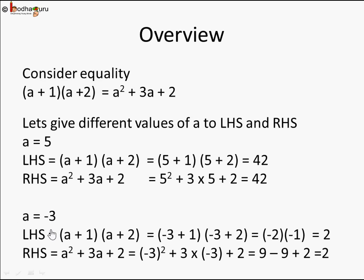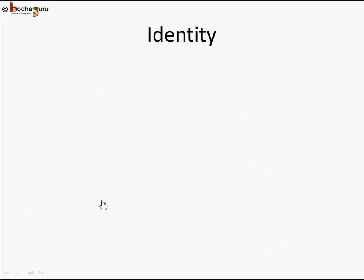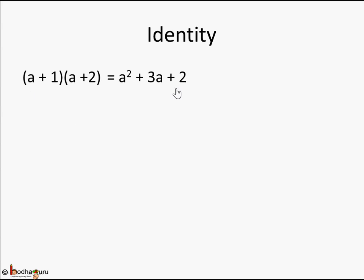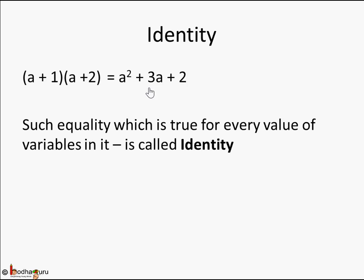You can give any value and you're going to find left hand side and right hand side are the same for that particular value. Such an equality — an algebraic expression on the left side and right hand side — which is true for every value of the variables is called an identity. So (a + 1)(a + 2) = a² + 3a + 2 is an identity.